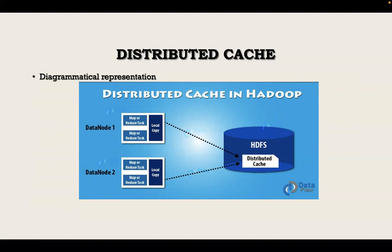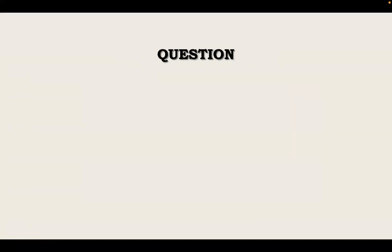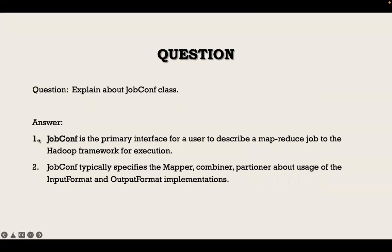In distributed cache, we distribute the data accordingly per job. Finally, there is a question: explain about the JobConf class. The JobConf class is the primary interface for a user to describe a MapReduce job to the Hadoop framework for execution. JobConf typically specifies the mapper, combiner, partitioner, and the input format and output format implementations. That's a brief explanation of the distributed cache and job configurations features of MapReduce.